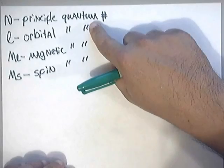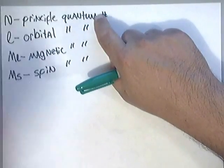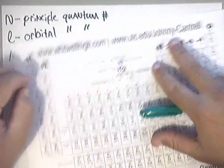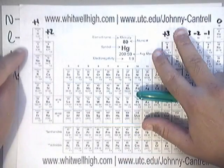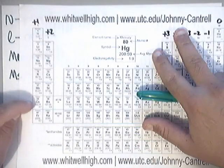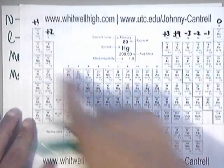Now, let me explain to you what the N is. That's the easiest one to explain. On a periodic table, you'll notice that there are 1, 2, 3, 4, 5, 6, 7 rows.